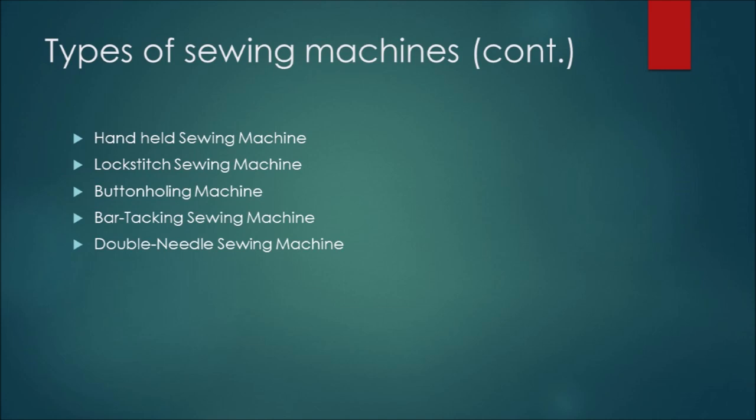Number seven: embroidery sewing machine. Patterns are designed on clothes by connection with a computer.